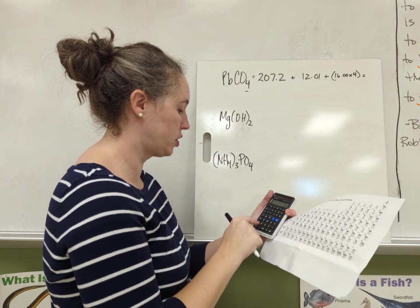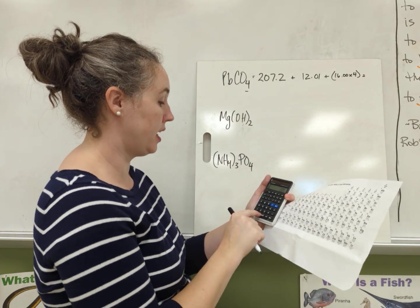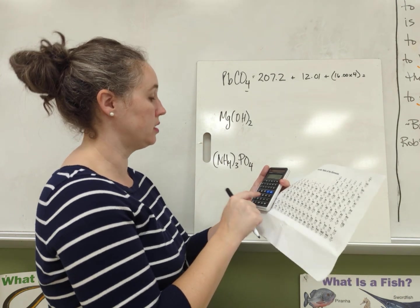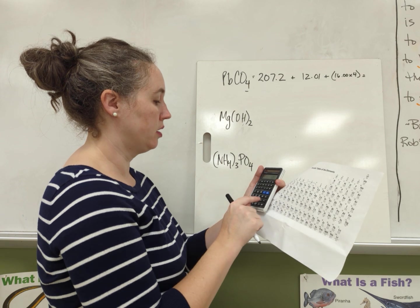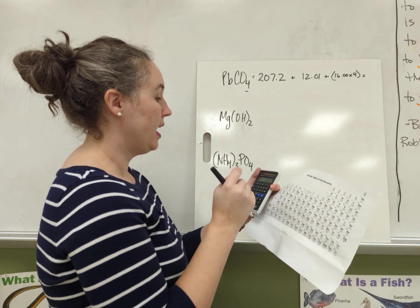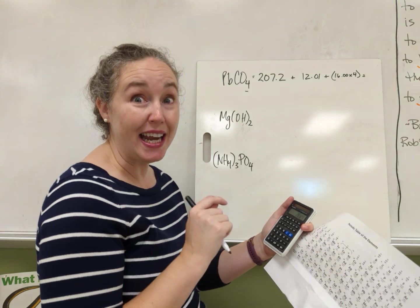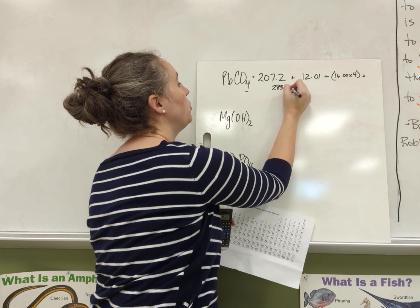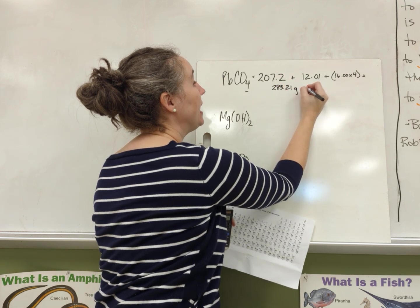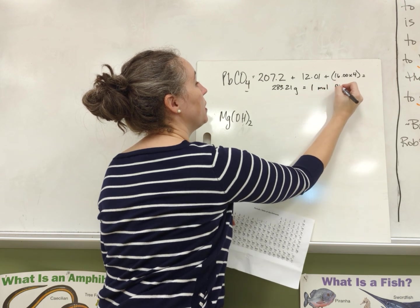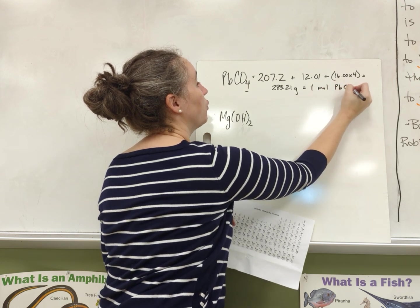This is going to be pretty big, 207 because lead there is large. 207.2 plus 12.01 plus 64.00. 283.21 grams in one mole of PbCO4. Now we can use this as a conversion factor in like a stoichiometry problem.